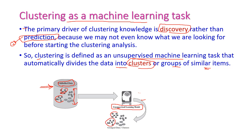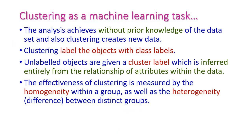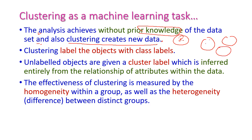Here, the triangles will become separate groups, rectangles separate groups, circles separate groups, and ellipses separate groups. This analysis is achieved without any prior knowledge of the data — this is the most important characteristic of clustering. Clustering can also create new data; for example, given three different clusters with data inside, the clustering algorithm can create new data for each particular cluster.